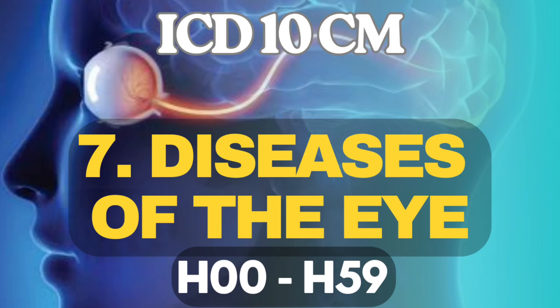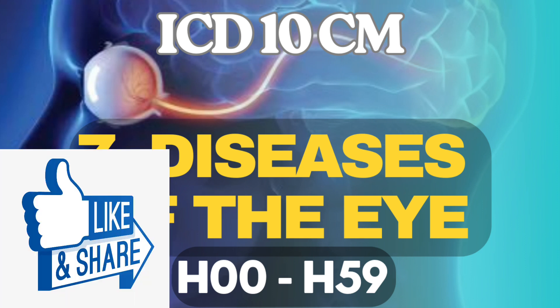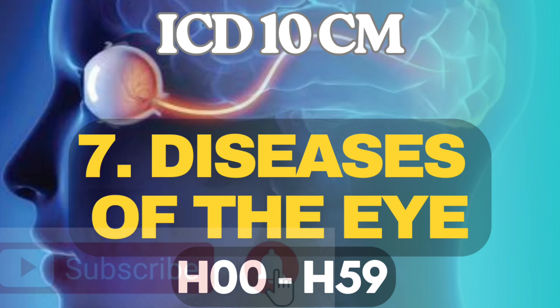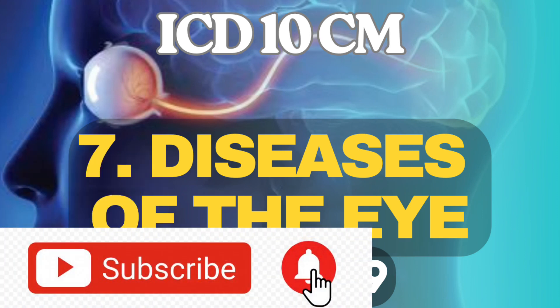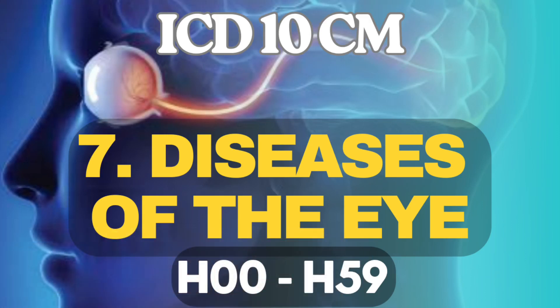That covers all of Diseases of the Eye and Adnexa — Glaucoma and blindness or low vision. The other diagnoses in this category are straightforward, which is why there are no separate guidelines for them. If you have any doubts, feel free to ask in the comment section or email me. If you found this video useful, please hit the like button, subscribe, and hit the notification icon so you won't miss any future guideline or medical coding videos. This is Suriya Johnson, your medical coding guide.